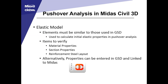With the elastic model, the elements used need to be similar to those used in the General Section Designer. When iterating designs, it's possible to change something in one program and forget to change it in the other. Things to verify are the material properties, section properties, and reinforcement steel. Alternatively, a recommended procedure is to use the linking tool to link the General Section Designer section to the program — that overrides anything already in the program and allows the elastic analysis to be based on the section defined in the General Section Designer.